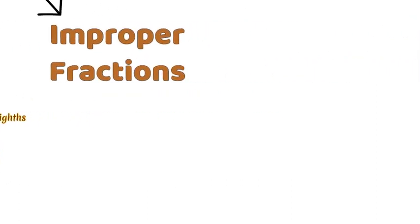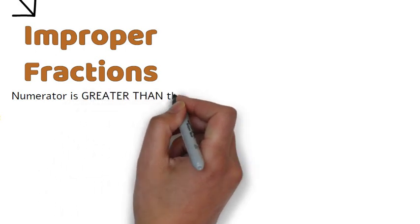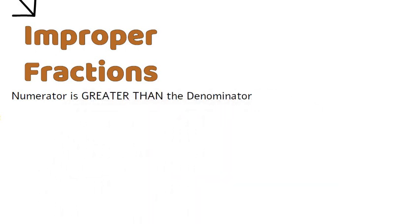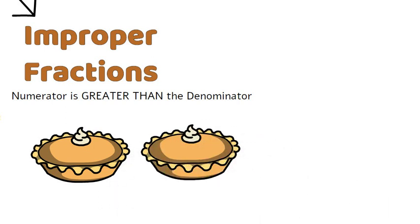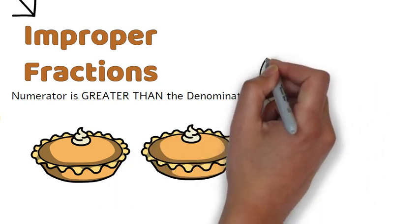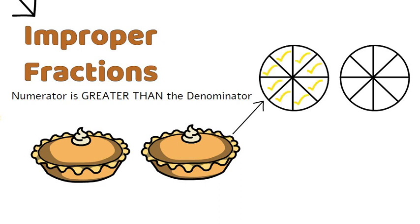An improper fraction is one where the numerator is greater than the denominator. As we can see here, there are two pies where both have been divided into 8 equal pieces each. If I select one of the pies and then an additional 3 pieces from the other pie,